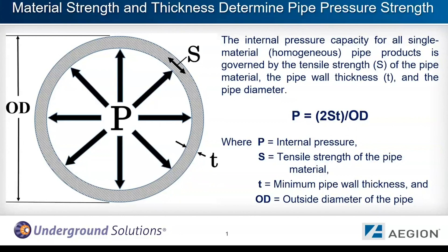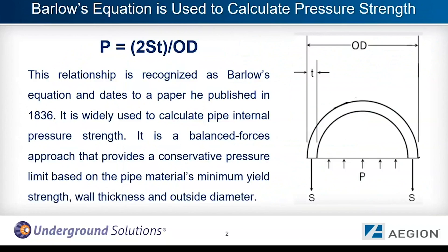Their mathematical relationship is described by the equation shown here. This relationship is most often recognized as Barlow's equation and dates to a paper that he published in 1836.